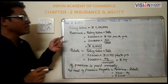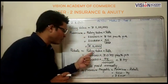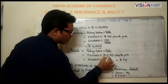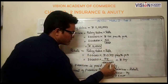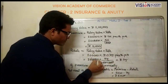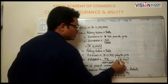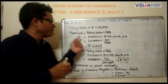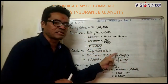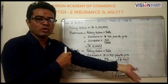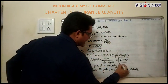The rebate is also calculated on policy value: 1 lakh into 0.75 per thousand comes to rupees 75. So we have premium of 5,600 and rebate of rupees 75. If premium is paid annually as given in the question.